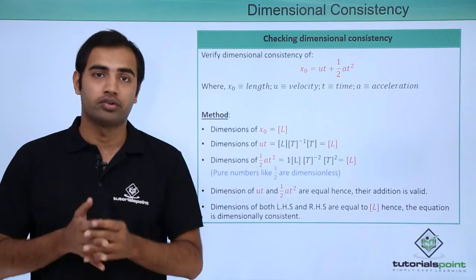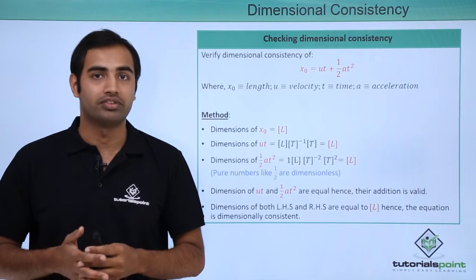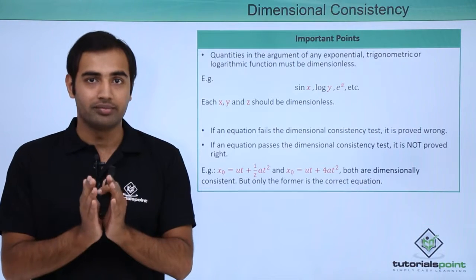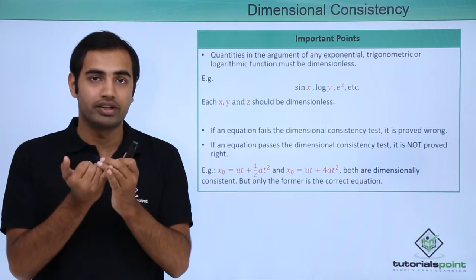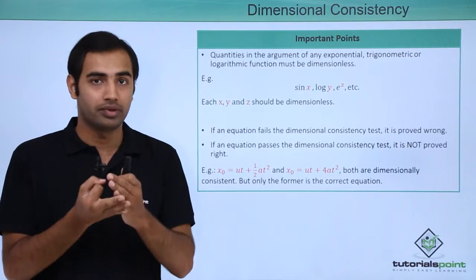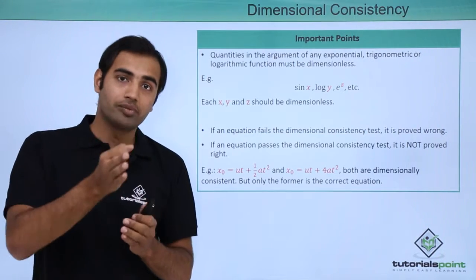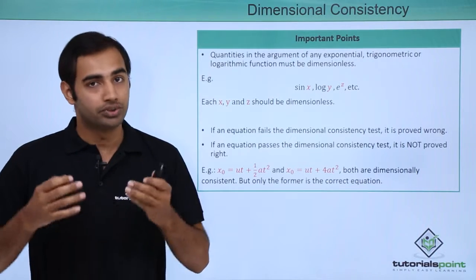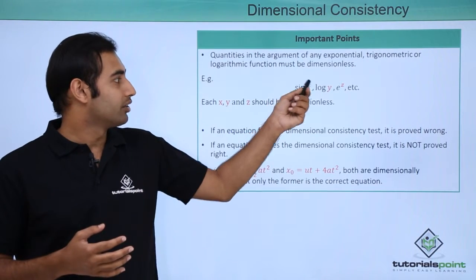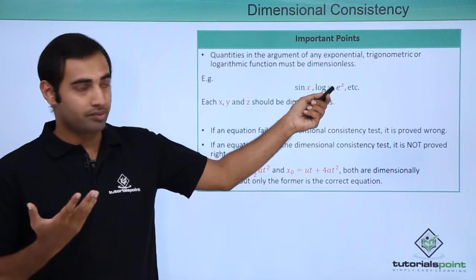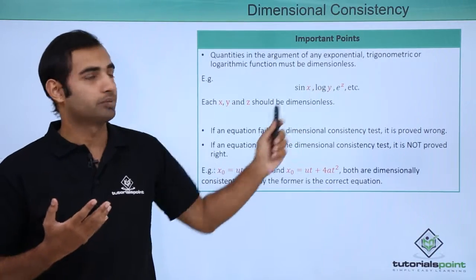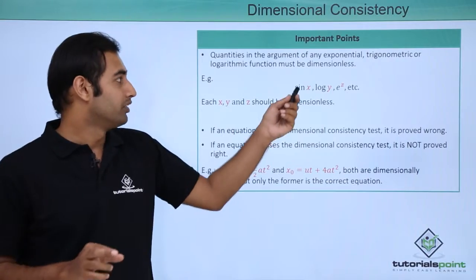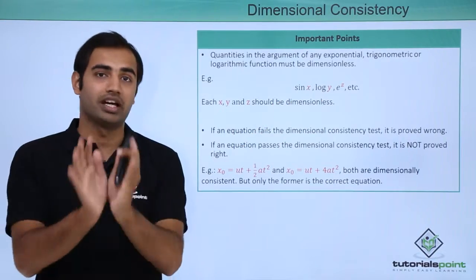Now let's talk about some important points associated with dimensional consistency. The first is that whenever we have trigonometric, exponential, or logarithmic functions, their arguments always have to be dimensionless. For example, in sin(x), log(y), and e^z - representing trigonometric, logarithmic, and exponential functions - the arguments x, y, and z must each be dimensionless. This is a compulsion.